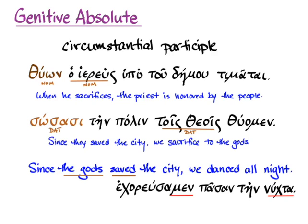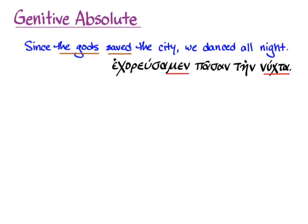This is where the genitive absolute comes in. The fact that the participle has nothing to agree with in the main clause is actually why this is called a genitive absolute — it exists independently of the syntax of the rest of the sentence. It's all on its own. It's absolute.